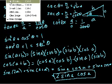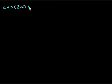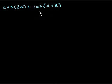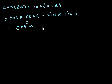Let's also do cosine of 2a. That equals cosine of a plus a. Using the cosine addition identity — cosine of both terms times each other minus sine of both terms — that equals cosine of a times cosine of a minus sine of a times sine of a. So cosine of 2a equals cosine squared a minus sine squared a.